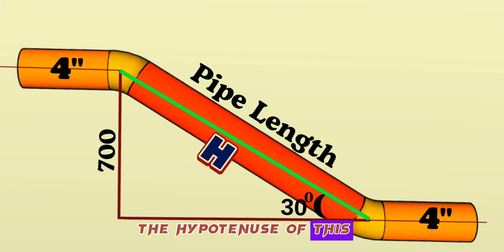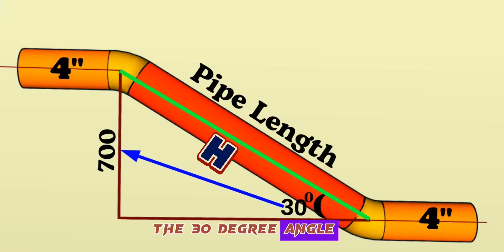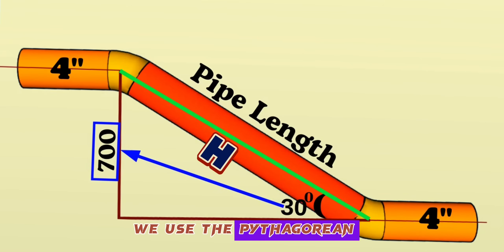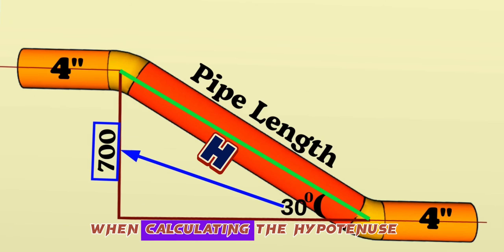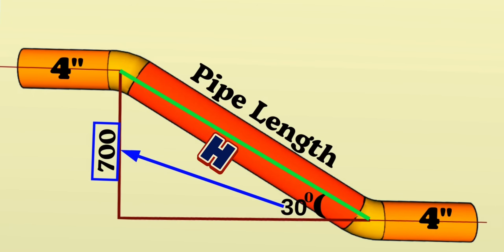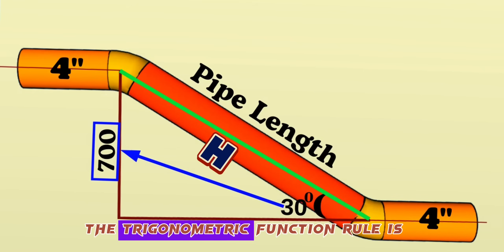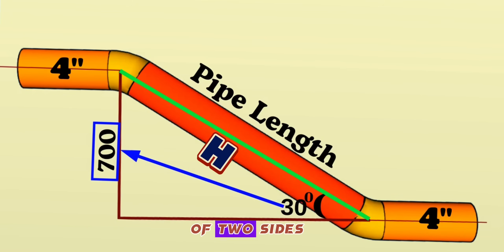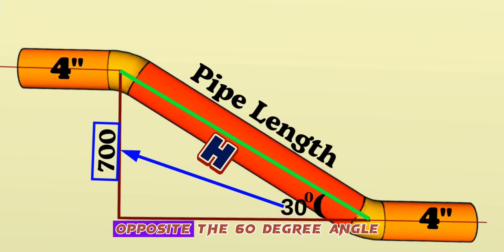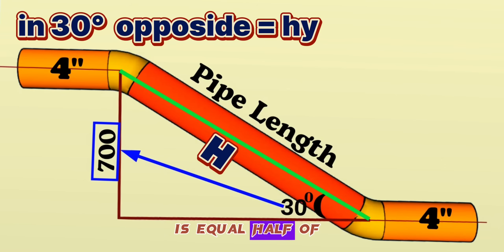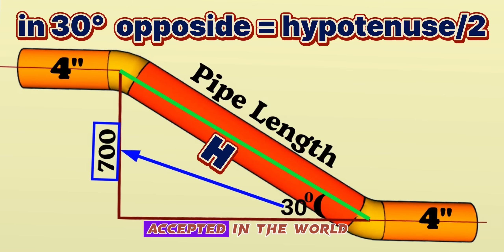Let's mark the hypotenuse of this right-angle triangle as H. The catheter opposite the 30-degree angle will be 700 millimeters. In this video, we will use the trigonometric function to calculate the hypotenuse. The shorter side is opposite the 30-degree angle, the longer side is opposite the 60-degree angle, and the hypotenuse is opposite the 90-degree angle. In a right triangle, the side opposite the 30-degree angle is equal to half of the hypotenuse — this is a universally accepted formula.